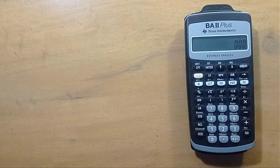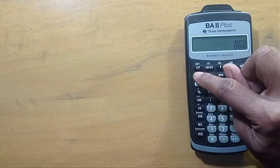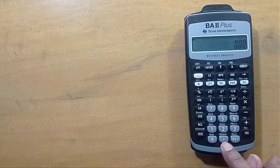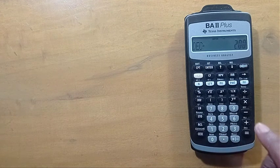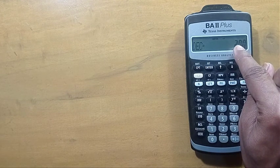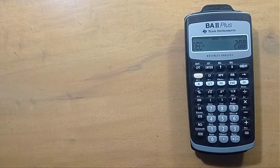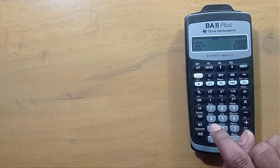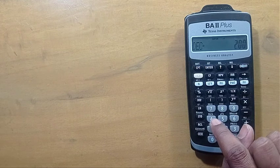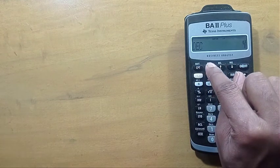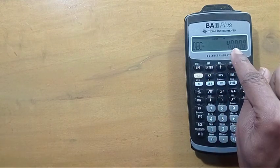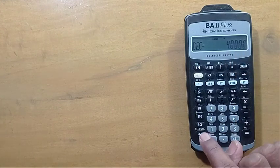To change the format, we have to press this yellow second, then this format. Change this 2 to 4 or 6 or whatever number you require, and press this enter. See, we have 4 digits after the decimal point now.